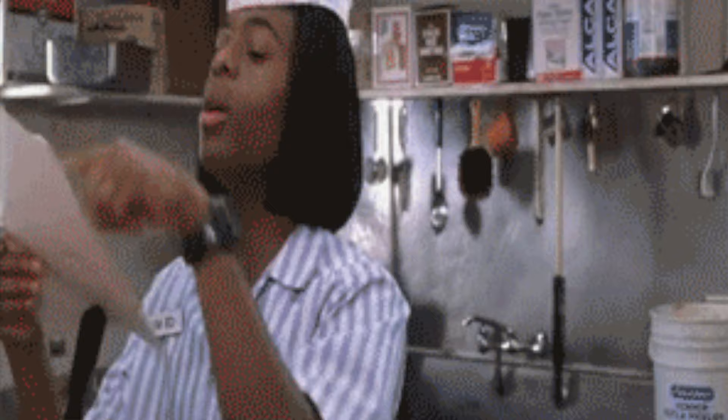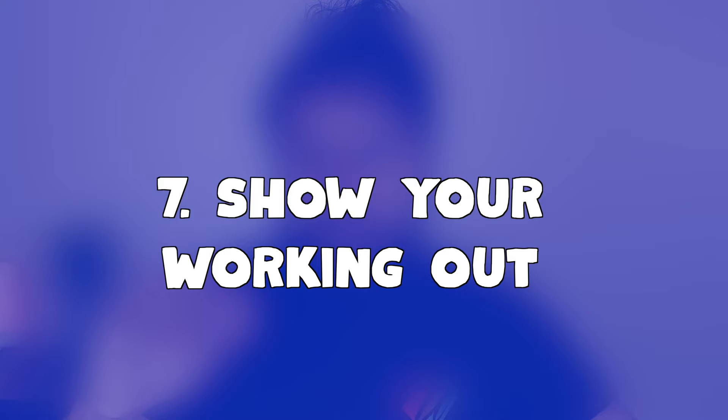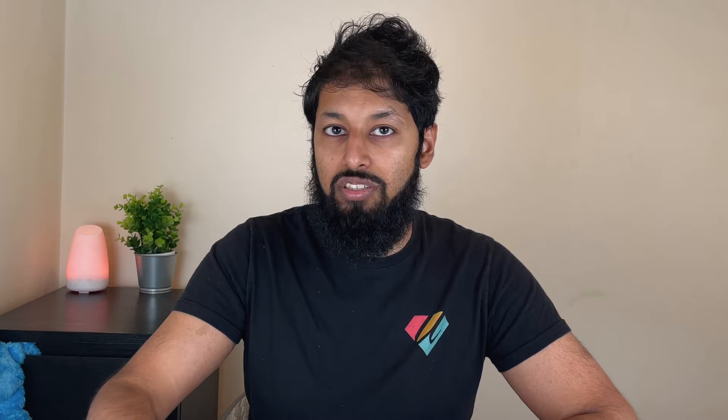The final point: treat the examiner like an idiot. That means write down every single step and show your working every single time. The examiner can't read your mind, and by treating them as if you need to explain everything, you ensure you won't make silly mistakes. If you enjoyed the tips in this video, check out some of my other videos on how to get great grades.